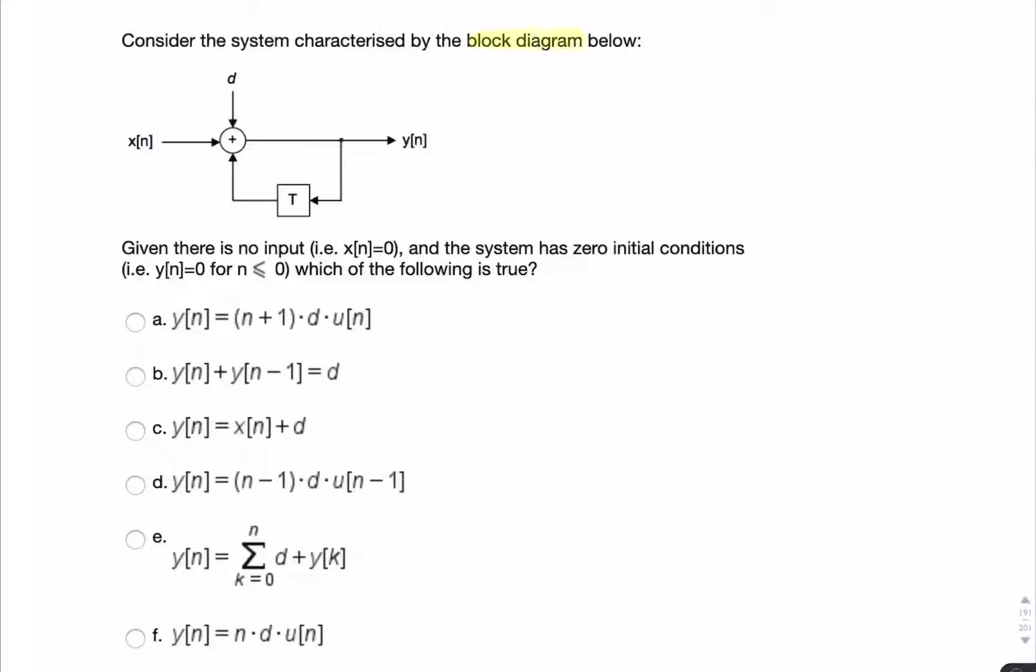In this question, we have a block diagram and we're asked for an expression for y of n. We're told that there's no input, so x of n is 0.